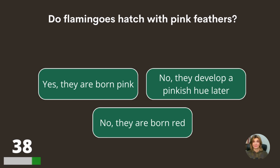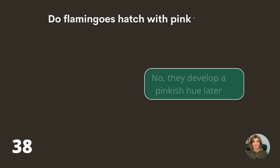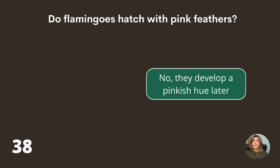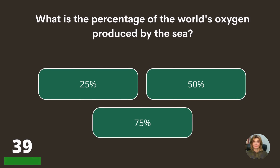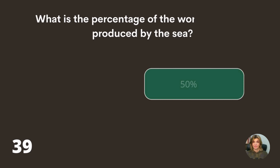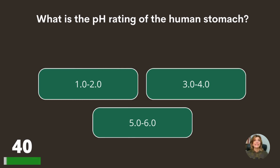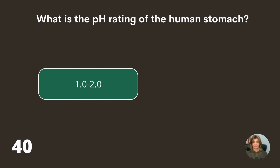Do flamingos hatch with pink feathers — yes, they are born pink; no, they develop a pinkish hue later; or no, they are born red? No, they develop a pinkish hue later. What percentage of the world's oxygen is produced by the sea — 25, 50, or 75 percent? What is the pH rating of the human stomach — 1.0 to 2.0, 3.0 to 4.0, or 5.0 to 6.0? 1.0 to 2.0.